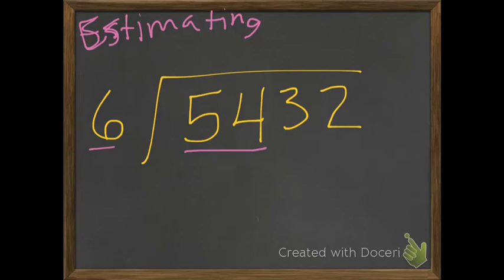So, 6 can't go into 5, so I've got to use 54. Well, what would I estimate 54 to that 6 can go into equally? Well, that would be 54 and then these two would go to 0. So I would estimate that number to 5400 divided by 6.